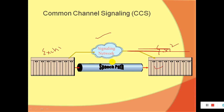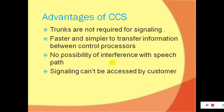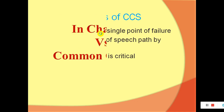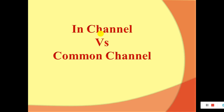This is the difference between CCS and in-channel signaling. Advantages of CCS: trunks are not required for signaling because it is sent on a different channel; it is faster and simpler to transfer information between control processors; there is no possibility of interference with the speech path because signaling is separate; and signaling cannot be accessed by the customer since it goes on a separate link. Disadvantage: the CCS link can be a single point of failure — if it fails, the entire process goes down. Also, there is no inherent testing of the speech path by call setup signaling, and CCS response time is critical.